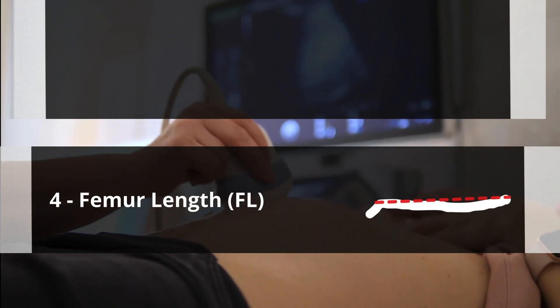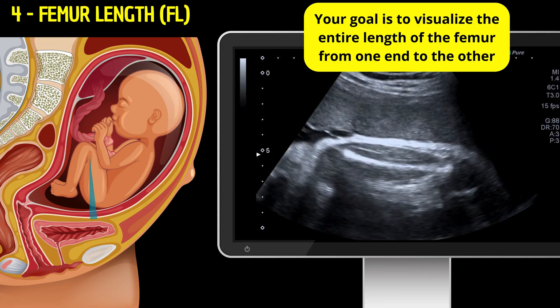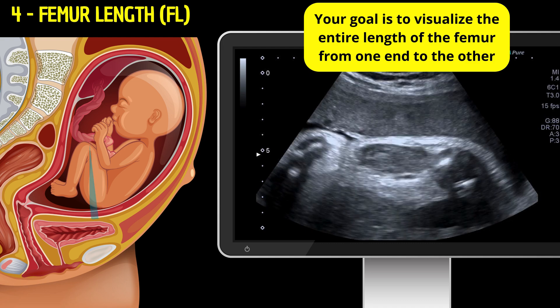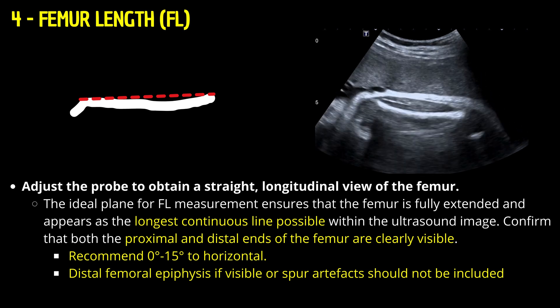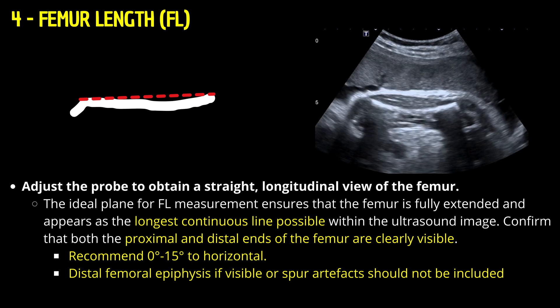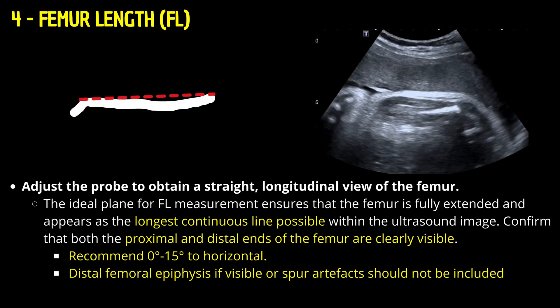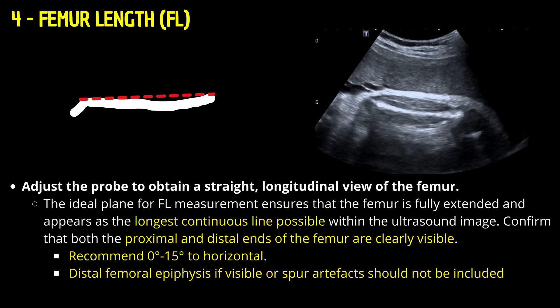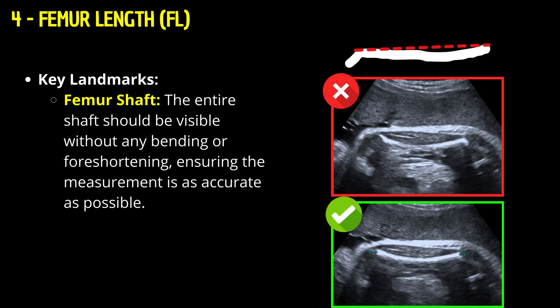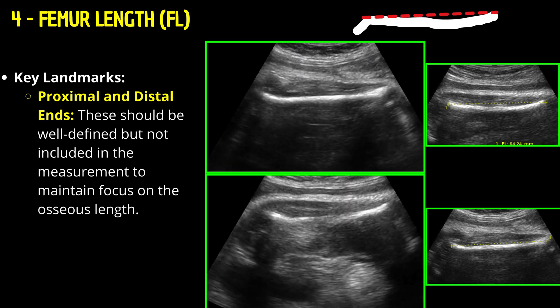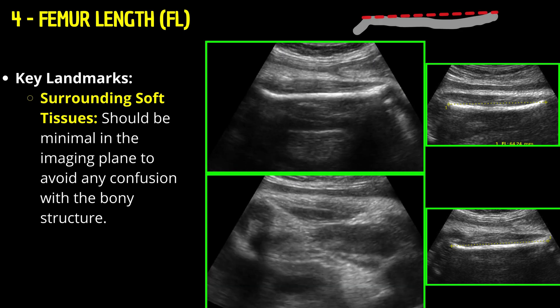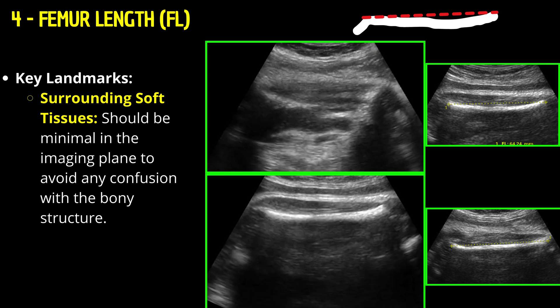Femur length — positioning the probe: Place the probe longitudinally along the mother's thigh line, targeting the fetus's femur. The goal is to visualize the entire length of the femur from one end to the other. Adjust the probe to obtain a straight longitudinal view, ensuring the femur is fully extended and appears as the longest continuous line possible. Confirm that both the proximal and distal ends of the femur are clearly visible. The entire femur shaft should be visible without any bending or foreshortening. The proximal and distal ends should be well-defined but not included in the measurement, maintaining focus on the osseous length. Surrounding soft tissues should be minimal in the imaging plane to avoid confusion with the bony structure.